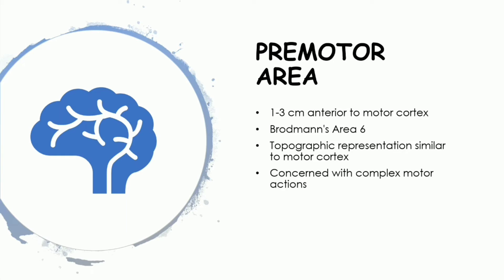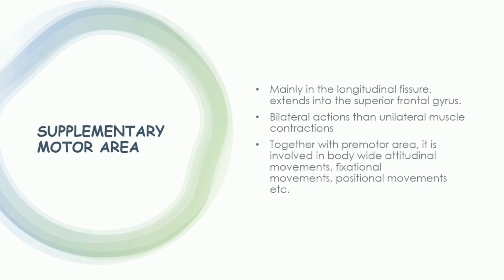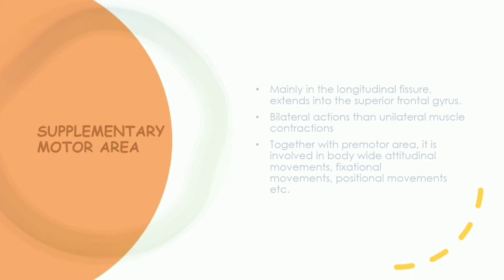What about the pre-motor area? This part is present anterior to the primary motor cortex, and Brodmann's area 6 encompasses the pre-motor area as well as the supplementary motor area. The pre-motor area and supplementary motor area are involved in complicated actions such as positional movements — if you are picking up something or writing. All three centers act together so that we can perform such complicated actions.